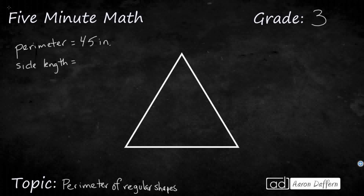Now it might not seem like a math term, but this word "regular" is actually a pretty important vocabulary term. What this means is a regular shape is a type of shape that has equal sides and it also has equal angles. So when you have a regular shape, that means you can guarantee that every side length is the same and every angle is the same.